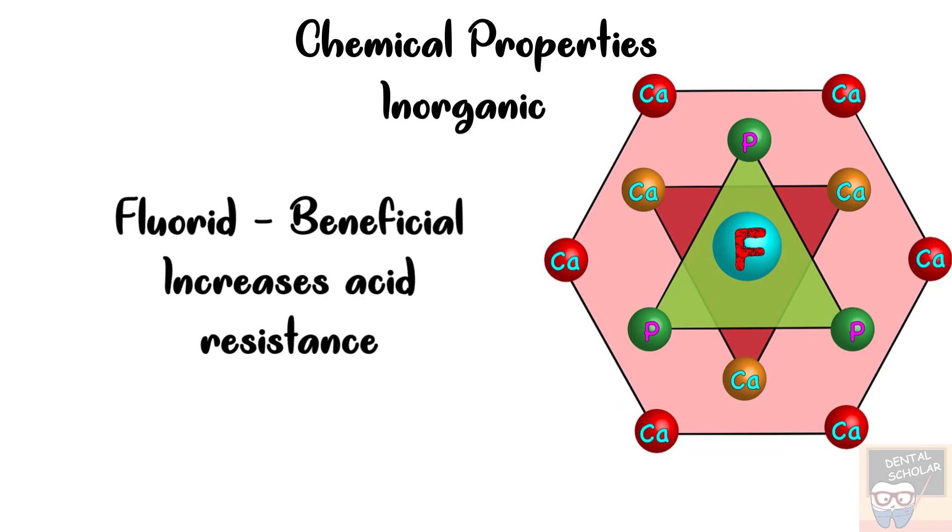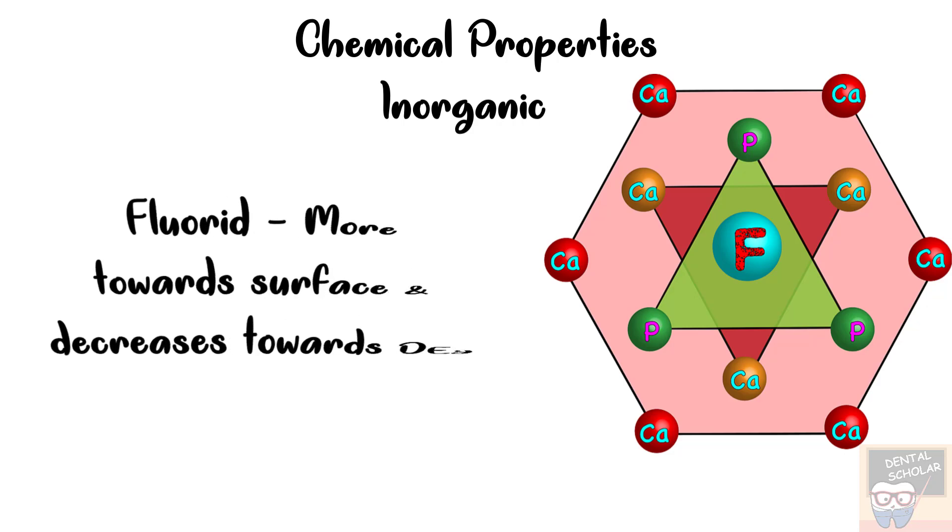Another common substitution is fluoride. Fluoride substitution is beneficial as it increases acid resistance. And the concentration of fluoride is more towards the surface of the enamel as we apply fluoride externally. So the concentration of fluoride would be more on the surface. But as we move towards DEJ its concentration decreases.